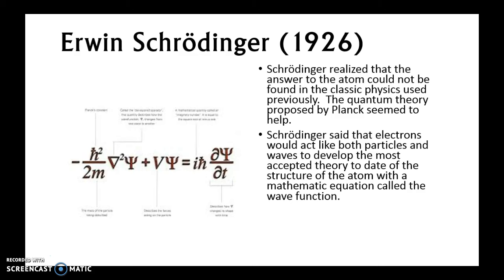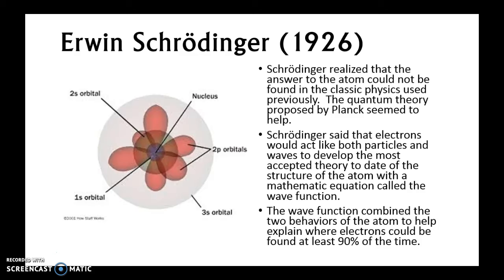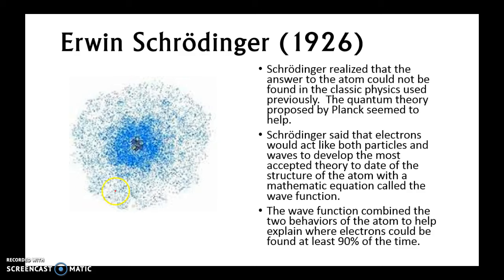Schrödinger used ideas from Einstein's E = mc² and Planck's work, combined with the concept of a wave, to develop this new equation. The wave function combines the behaviors of the atom so we can explain where the electron can be at least 90% of the time. His view was an electron cloud model: the dark dense center is the nucleus, and as you go further out is where the electrons can lie — we can't see specifics, only this cloud.